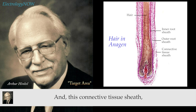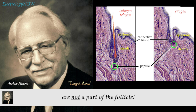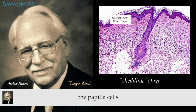Surrounding the follicle, you have a connective tissue sheath — the same kind of connective tissue that goes between the dermis and the epidermis surrounds the entire follicle. So the papilla cells are not a part of the follicle itself, but are a part of the connective tissue of the dermis. As the hair goes into its shedding stage, the papilla cells start their degeneration and they separate.